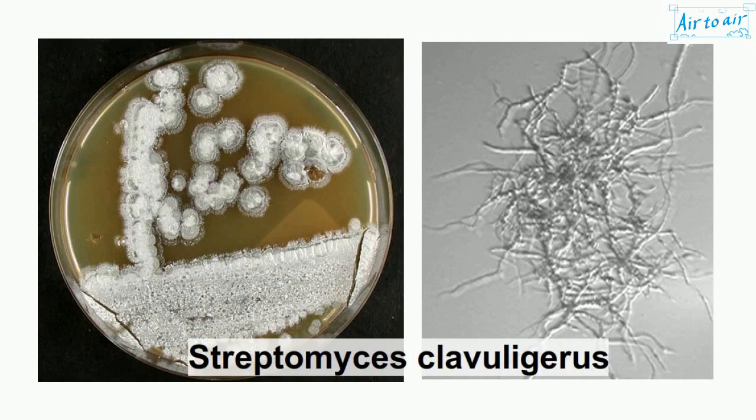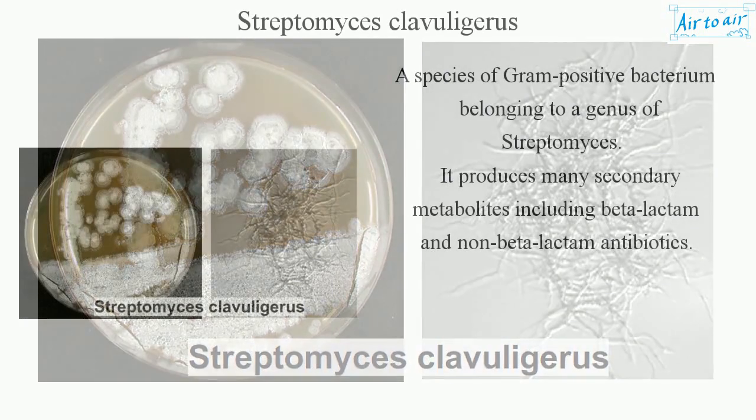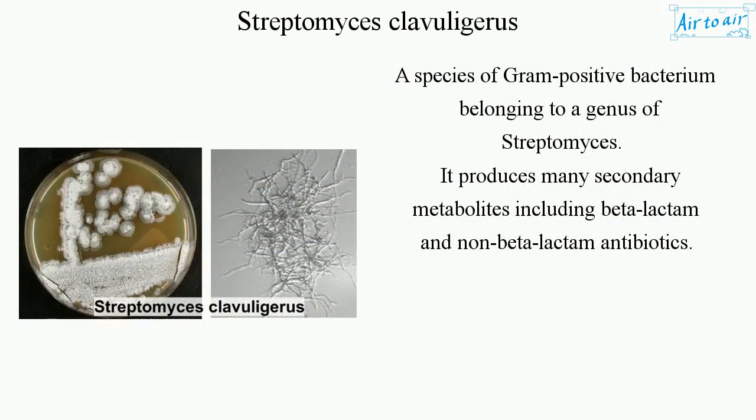Streptomyces clavuliguris is a species of gram-positive bacterium belonging to the genus Streptomyces. It produces many secondary metabolites including beta-lactam and non-beta-lactam antibiotics.